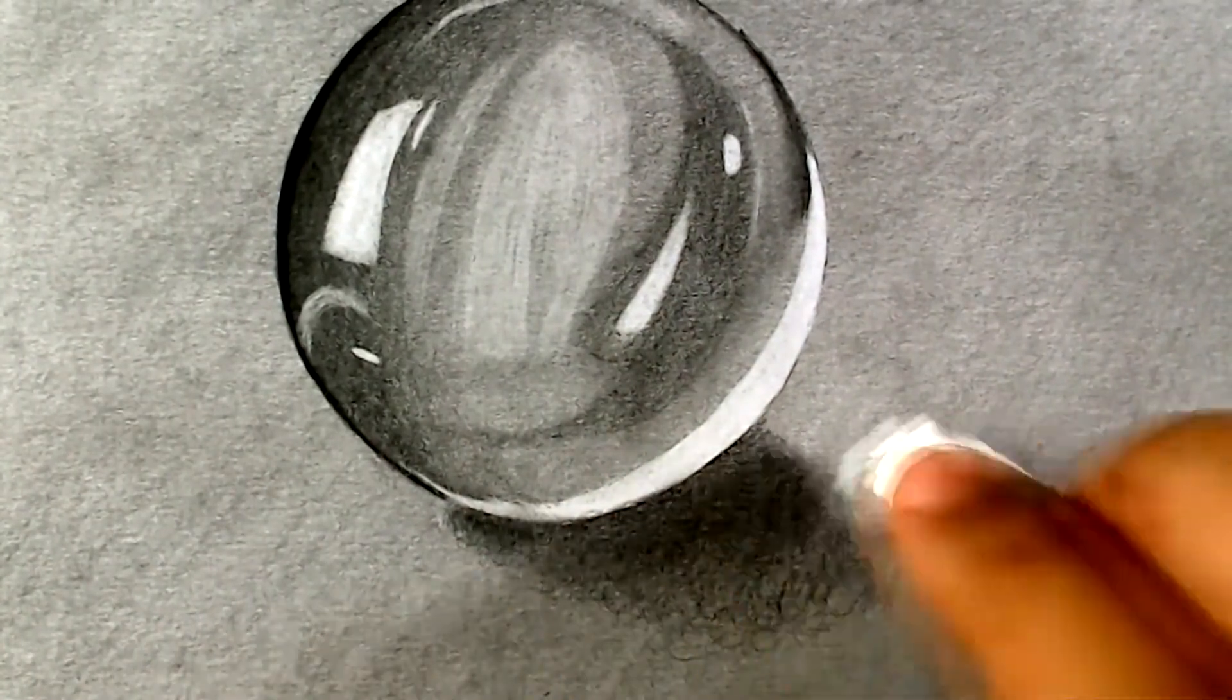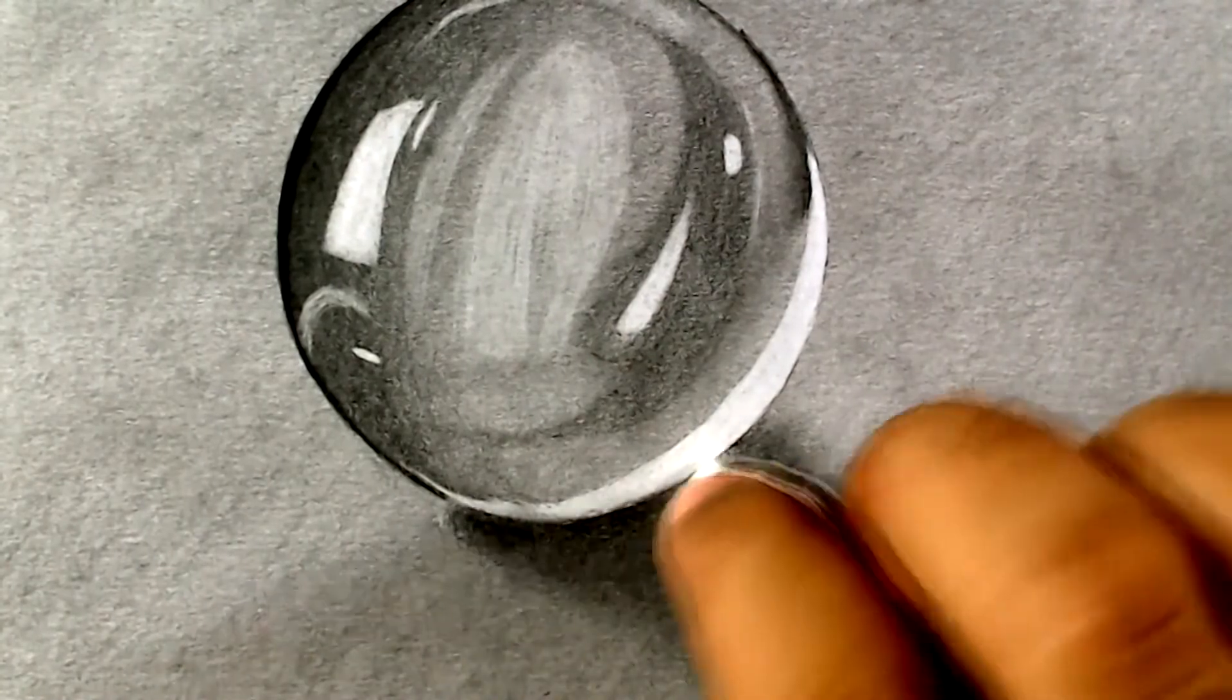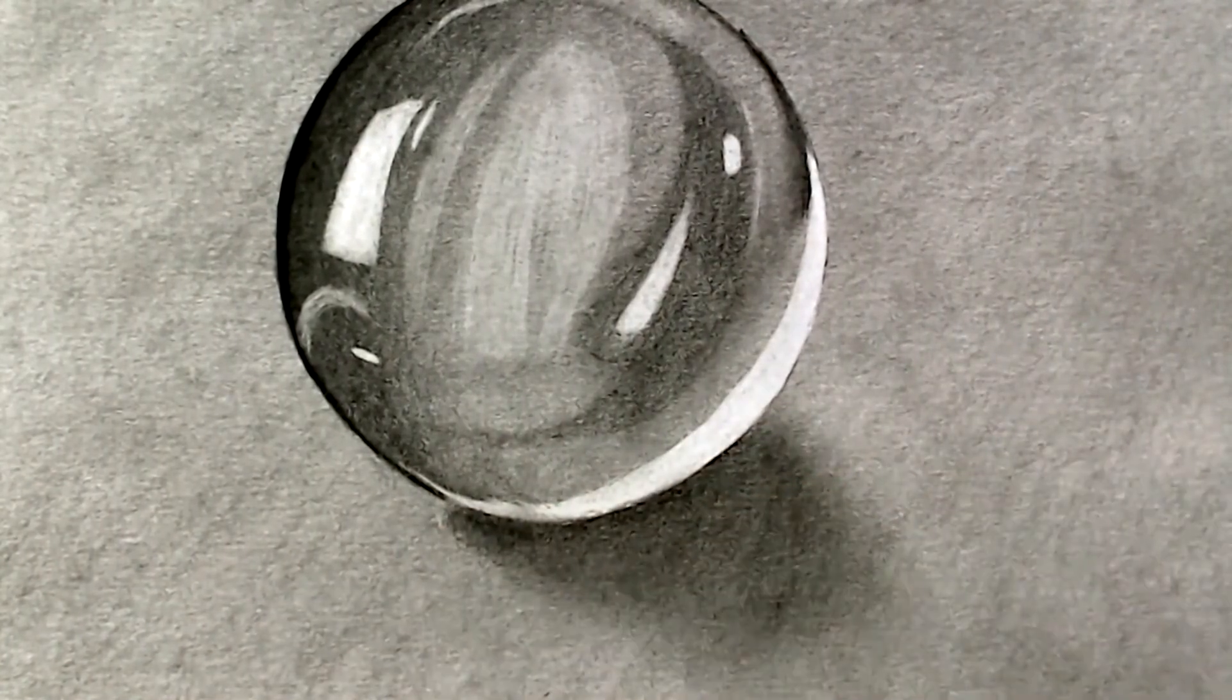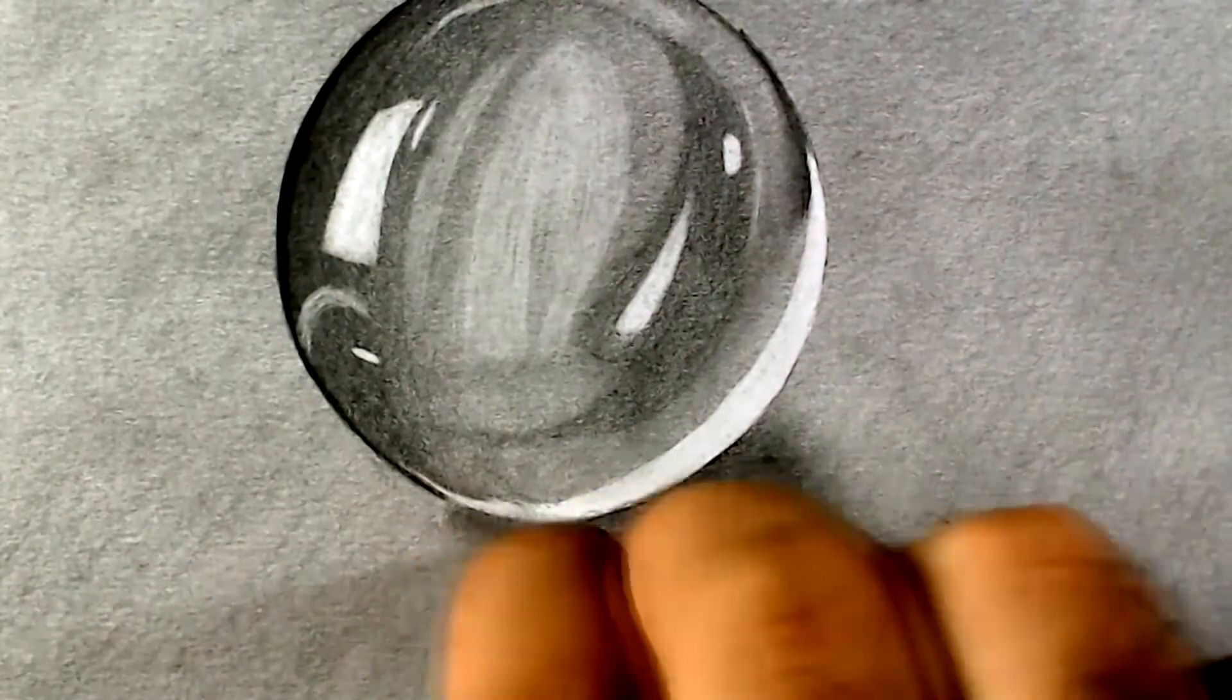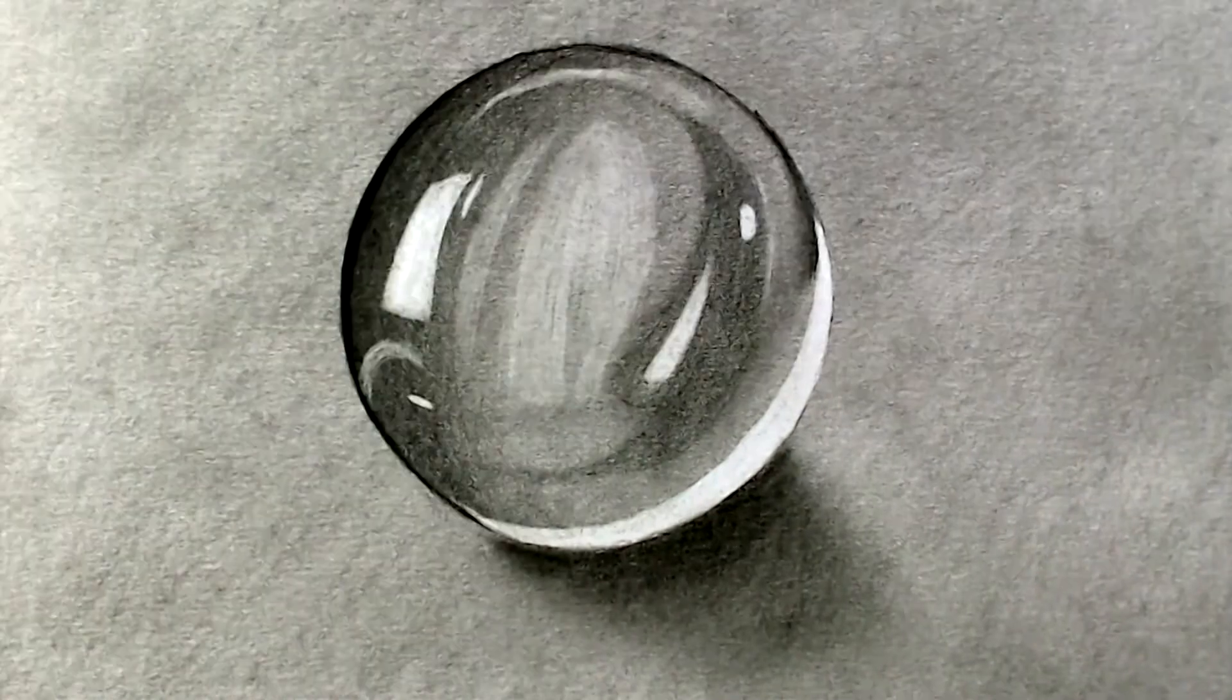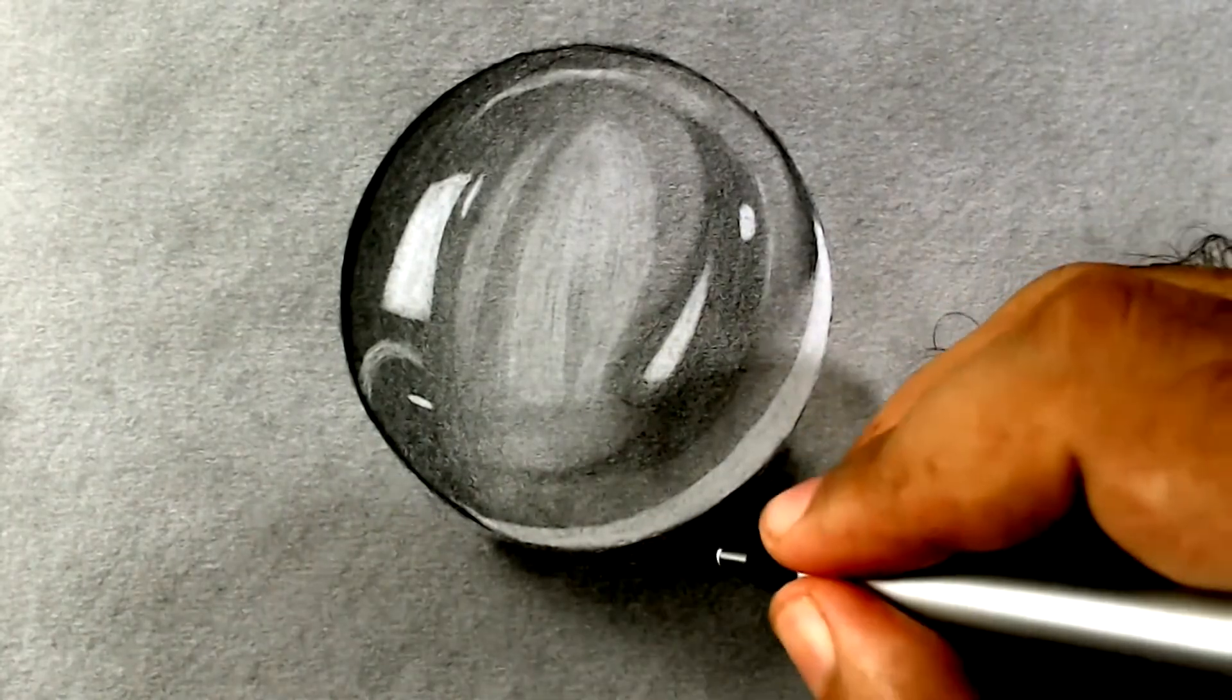After this, you can use the tissue to blend all this area. Let's make the shadow darker near to the ball and blend the graphite again, this time using the blending stump.